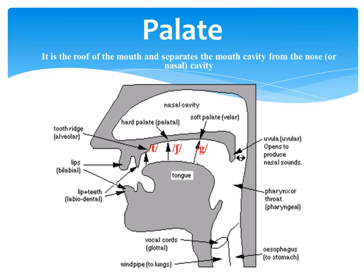If we move the back of the tongue against the soft palate, we can produce the sound /k/. And if we move the root of the tongue against the uvular, we can produce sounds like the African /g/ or the Arabic /g/ and so on and so forth.